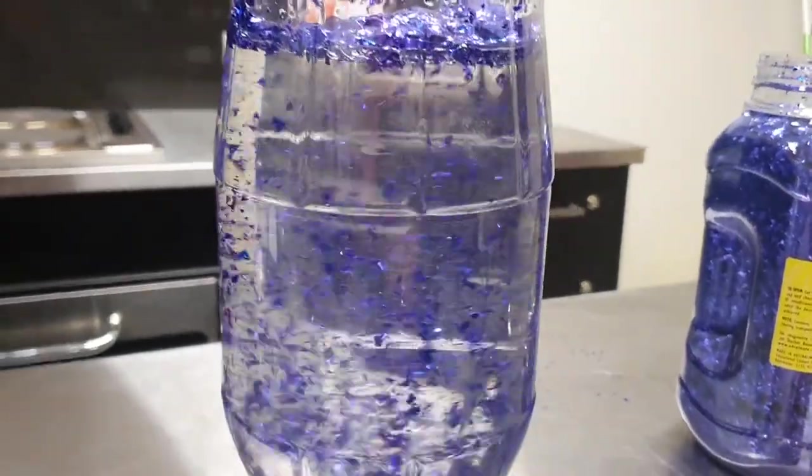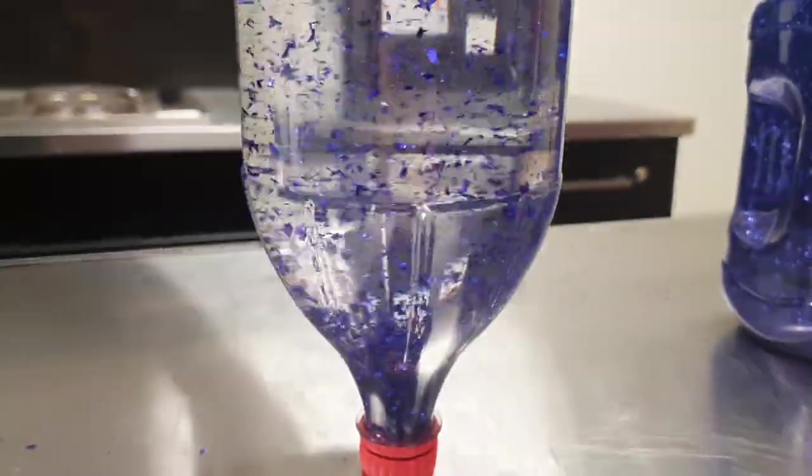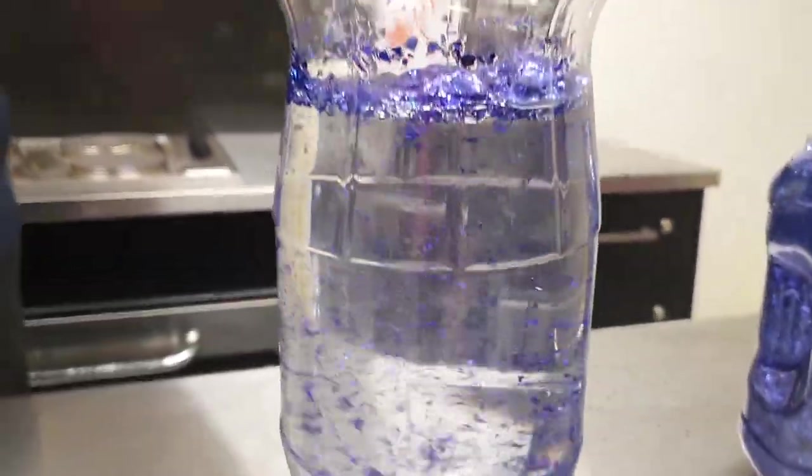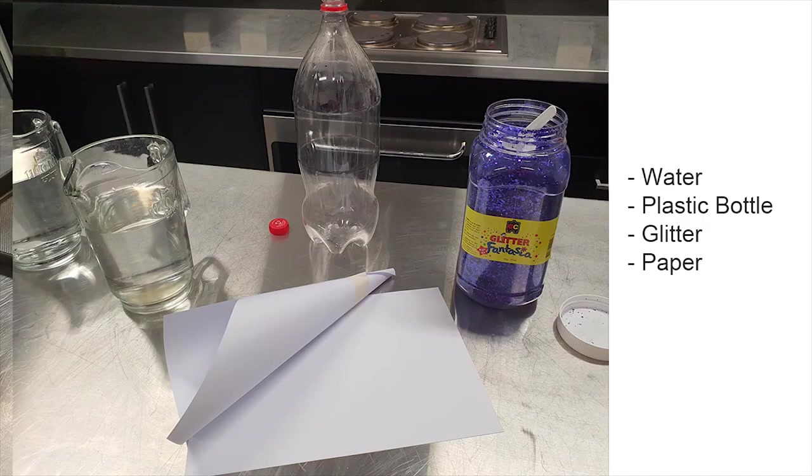In our next workshop we'll be making water tornadoes. In order to make this you will need water, a plastic bottle, some glitter and some paper. We'll see you then.